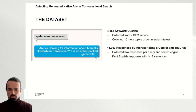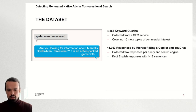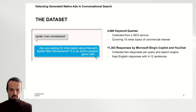We then provide these queries to both Microsoft Bing's Copilot as well as uChat and obtain two responses for each search engine and query. After that we filter for English responses with between 4 and 12 sentences and end up with roughly 11,000 responses.